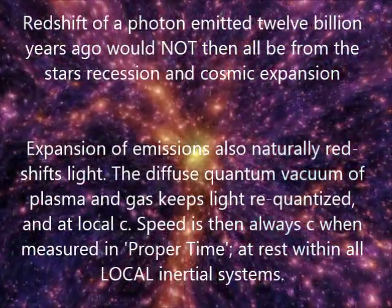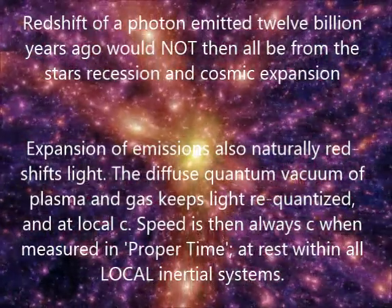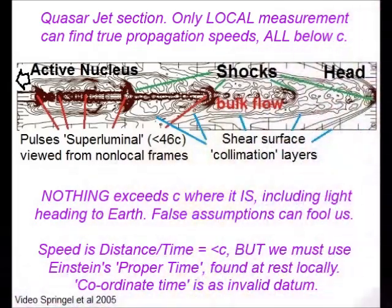Speed is then always c when measured in proper time at rest in local inertial systems. Quasar jet pulses can appear superluminal, but only local measurement finds true local speed in the bulk flow. Nothing exceeds c where it is, including emitted light. Beware of false assumptions. Speed is distance over time but only in proper time. So when at rest locally, the coordinate time of moving clocks is invalid.